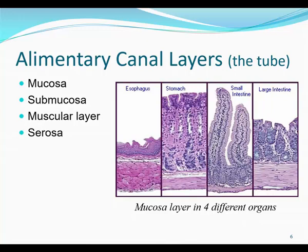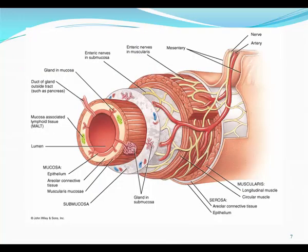The outermost layer is the serosa. It secretes a watery fluid called serous fluid to reduce friction when these organs move around. It's also called the visceral peritoneum. Its function is to reduce friction. A nice diagram of the four layers is shown here. Make a note of the mucosa, submucosa, smooth muscle, and serosa layers in this picture.